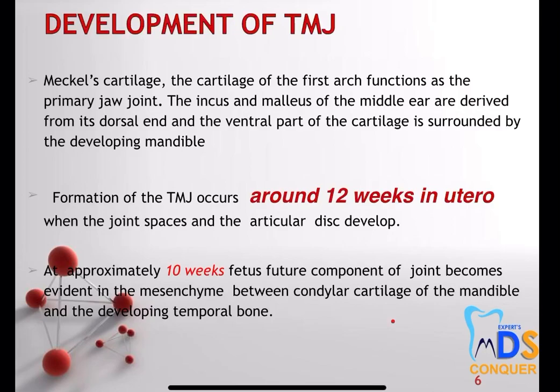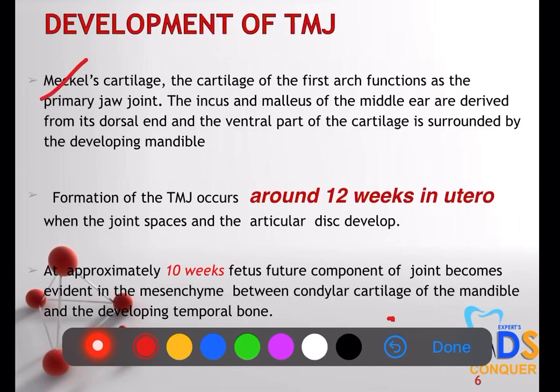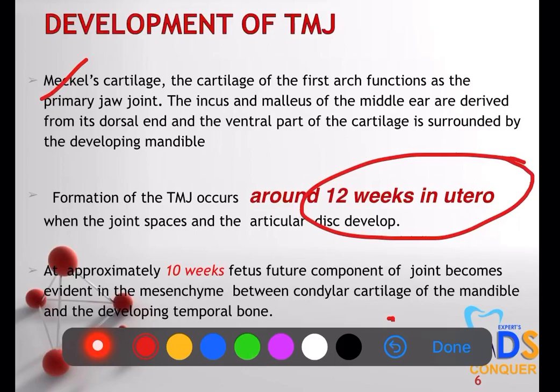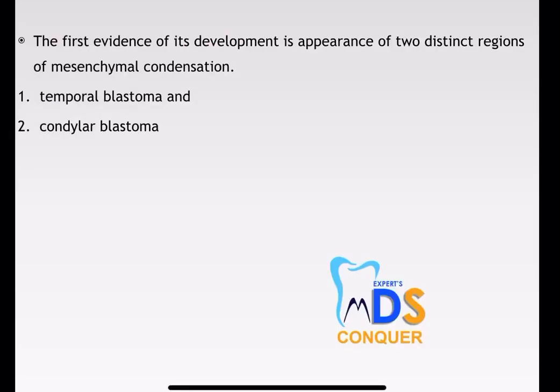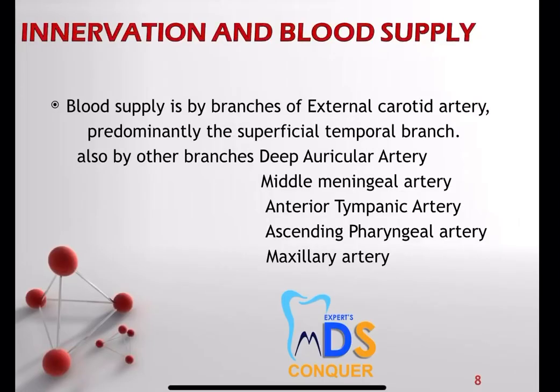Coming to the development: Meckel's cartilage, the cartilage of the first arch, actually functions as a primary jaw joint. Later the incus and the malleus are derived from the dorsal end and the ventral part of this cartilage, which is surrounded by the developing mandible. The formation actually occurs at 12 weeks in utero, where the joint spaces and the articular disc start to develop. At approximately 10 weeks the future component of the joint becomes evident in the mesenchyme between the condylar cartilage of the mandible and the developing temporal bone.